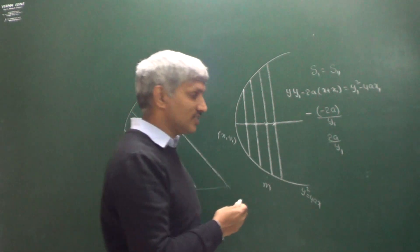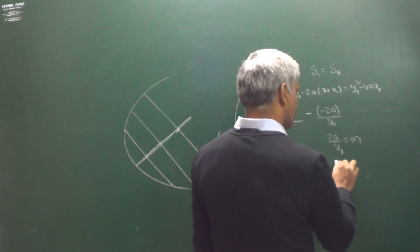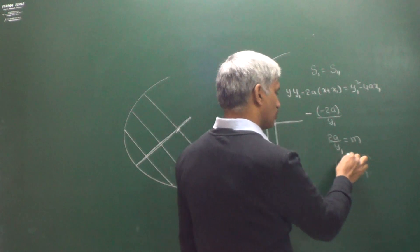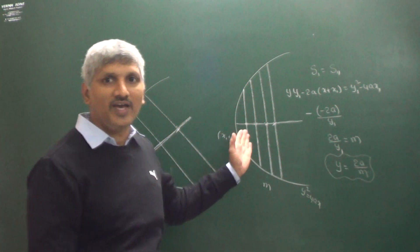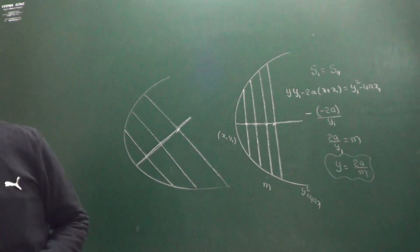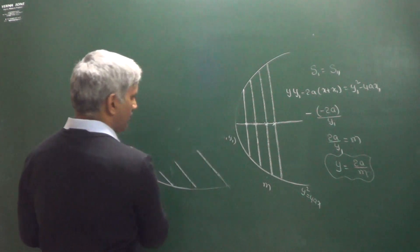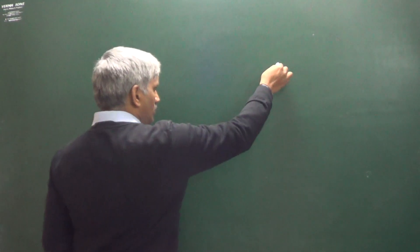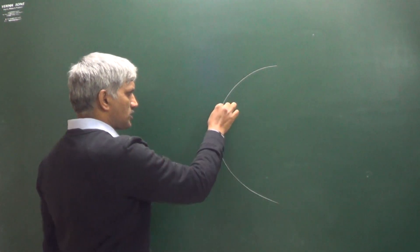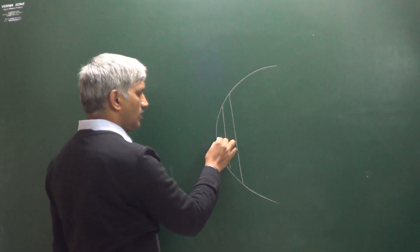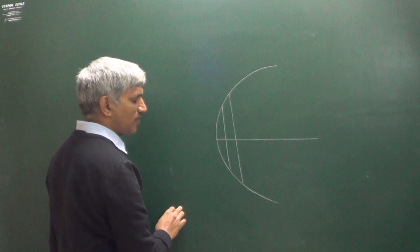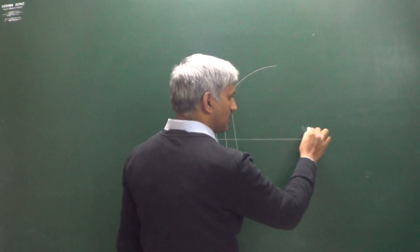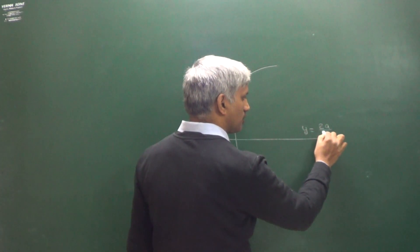But the slope of the chord is equal to m. So equating, we get 2a / y1 = m, therefore the locus equation is y = 2a / m. This is the equation of the diameter of a parabola. So for a system of parallel chords with slope m, the diameter equation is y = 2a / m.